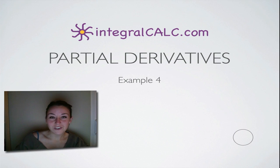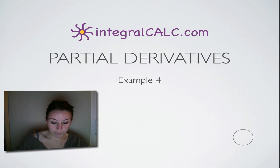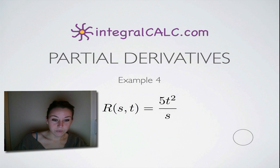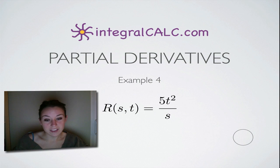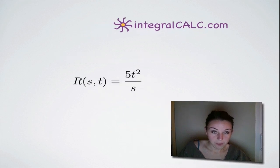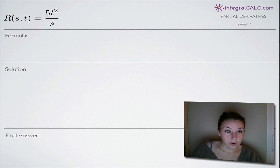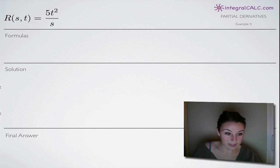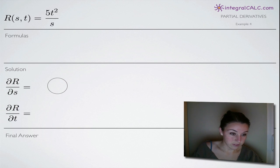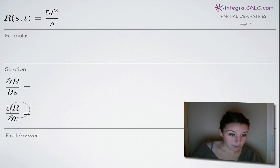Hi everyone, welcome back to integralcap.com. We're going to be doing another partial derivatives problem today. This one is the function r of st equals 5t squared over s. The first thing we're going to want to do with this problem is find the partial derivatives with respect to both s and t.